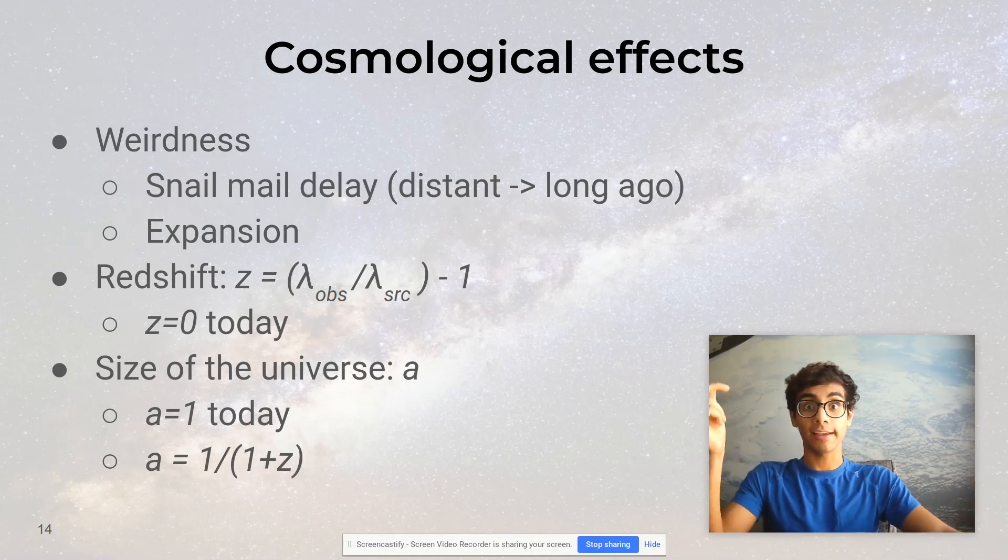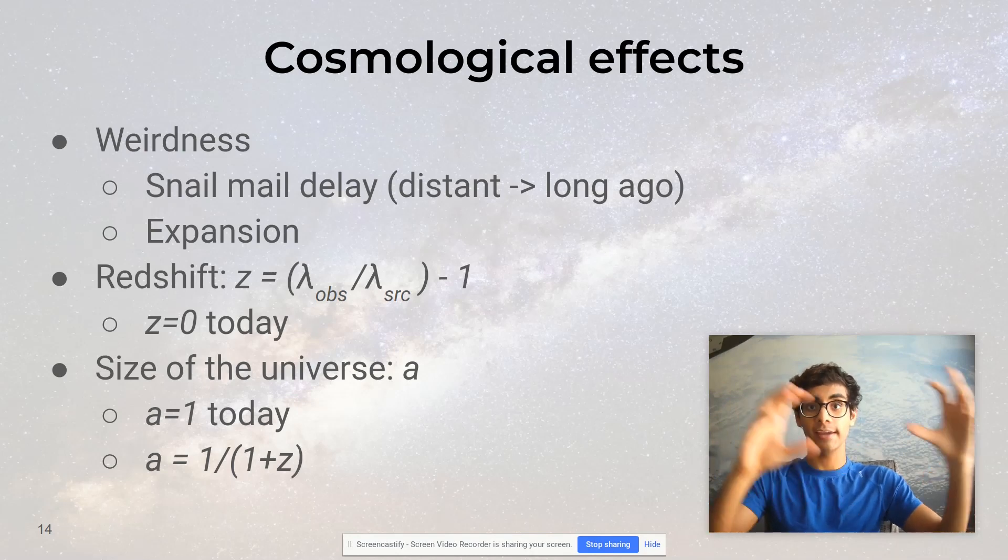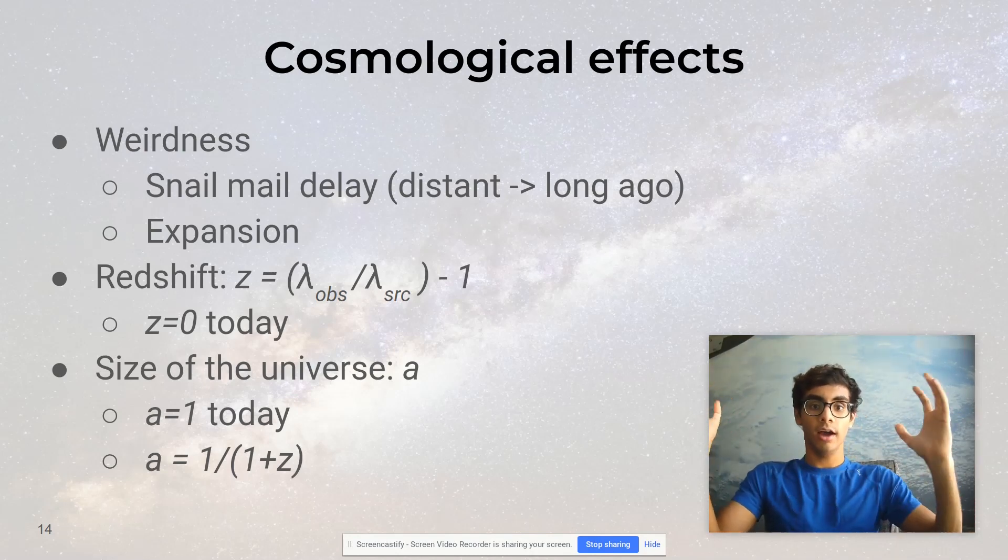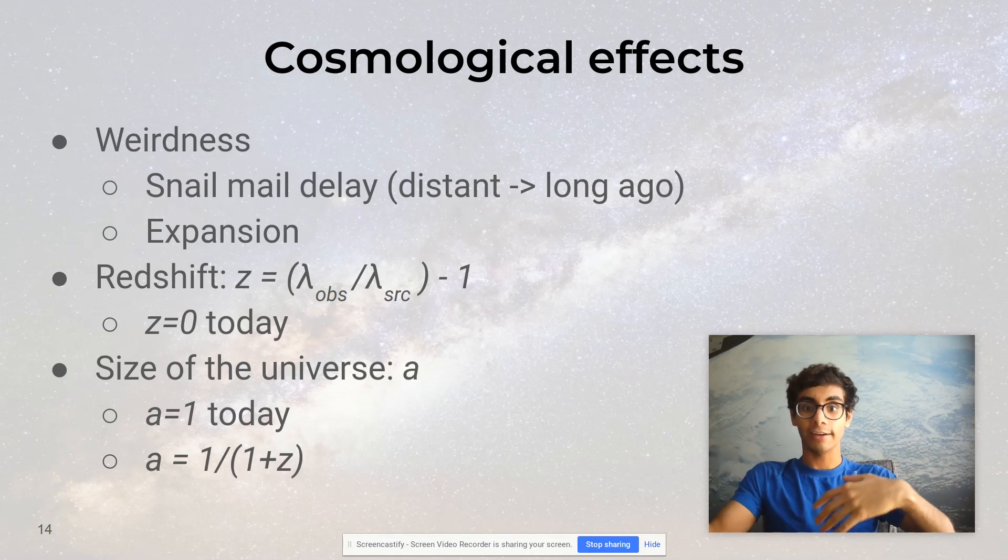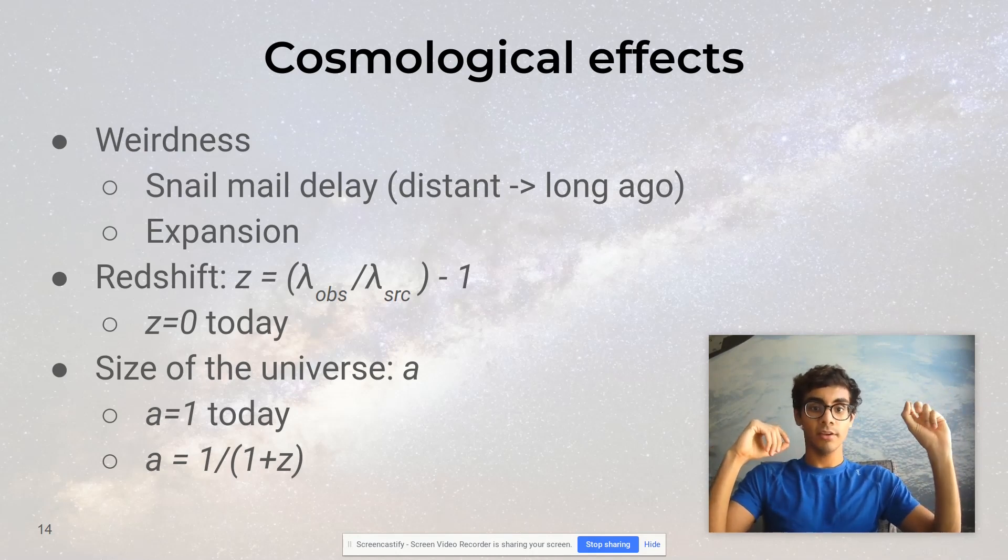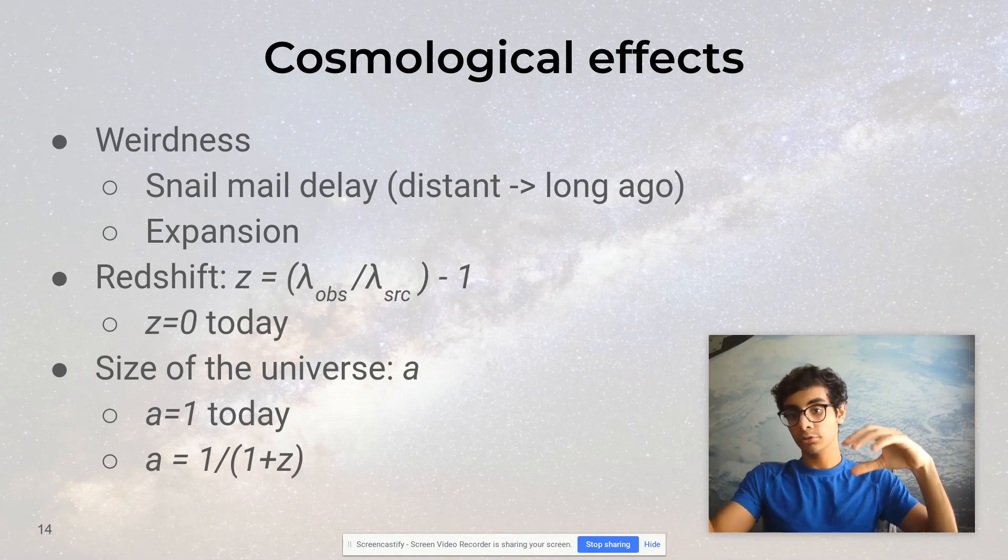There's one really important case where the snail mail delay and the expansion of the universe interact and produce an effect: redshift. Redshift is a pretty suggestive name. It refers to any time you've got some light that appears redder than it should, or than it originally used to be. We measure redshift using a number labeled z, which is related to the original wavelength and the observed wavelength. The formula is right here.